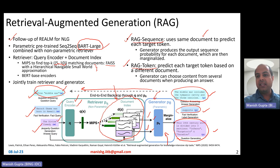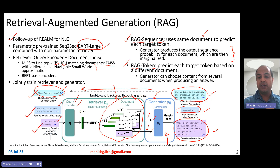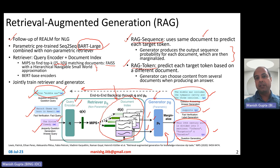In the RAG-Sequence scheme, the generator produces the output sequence probability for each augmented document, which are then marginalized. You find the top-k matching documents and one by one pass each document along with the original query to the model, generating a probability distribution. Then you add up all those probability distributions to compute a marginalized probability — the overall probability for each token — and choose the token with the highest probability.